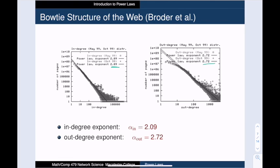For the out-degree, the exponent is 2.72. As a consequence, the in-degree hubs will be bigger than the out-degree hubs in this network.